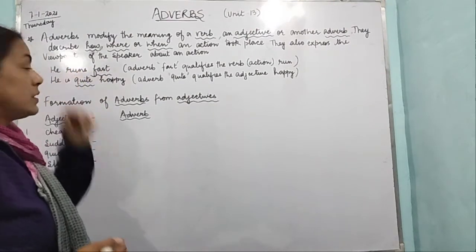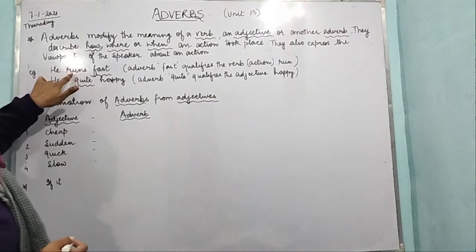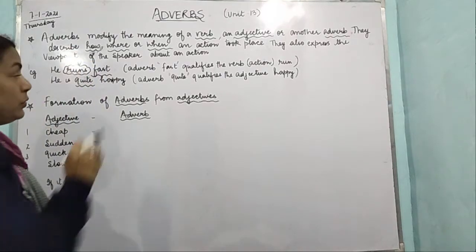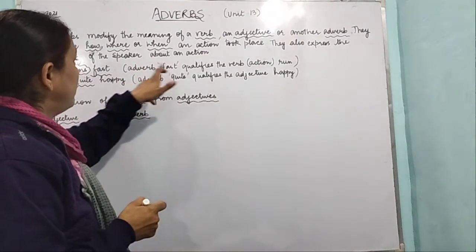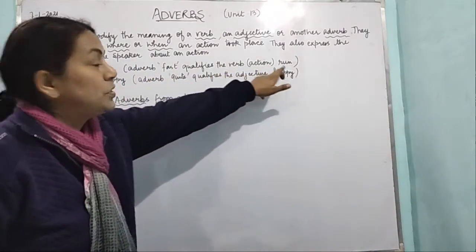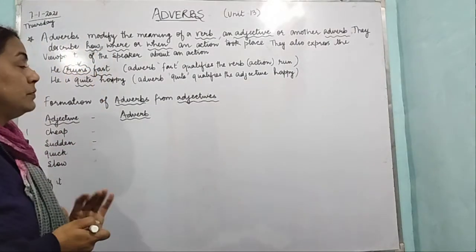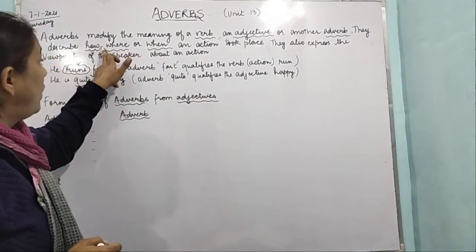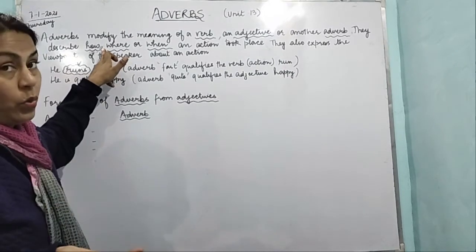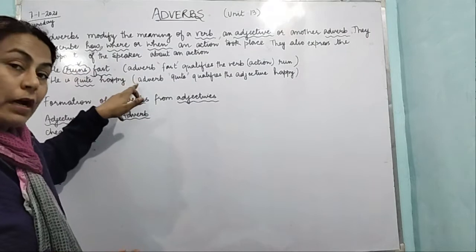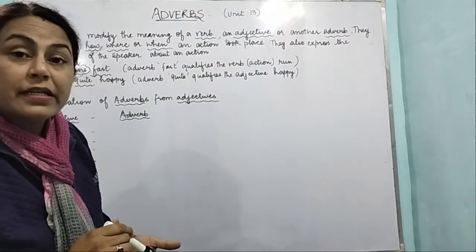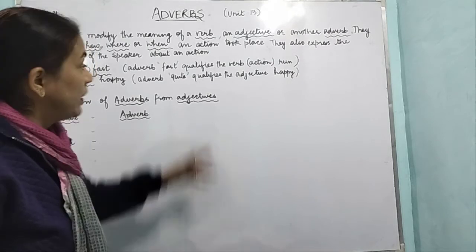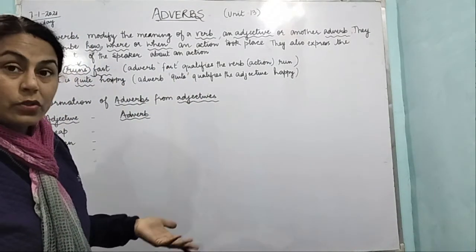Let's see the examples. He runs fast. In this, what is the verb? What action is going on? Runs. Runs is a verb, it's an action word. Fast. Now here in this sentence, adverb fast qualifies the verb action run. The question will come in your mind: he runs fast, right? Now you will ask yourself, how he runs? It is telling how he runs. So you will tell he runs fast. Here fast is qualifying the action that is run. It is telling how he runs.